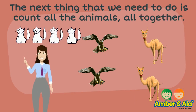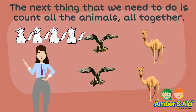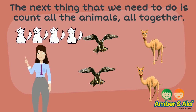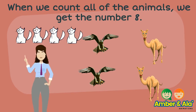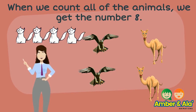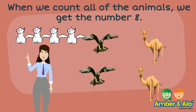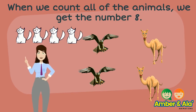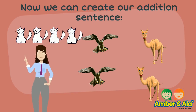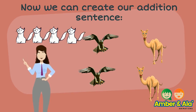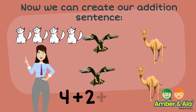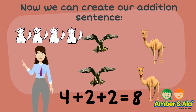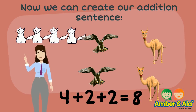The next thing that we need to do is count all the animals all together. When we count all of the animals, we get the number eight. Now, we can create our addition sentence: four plus two plus two equals eight.